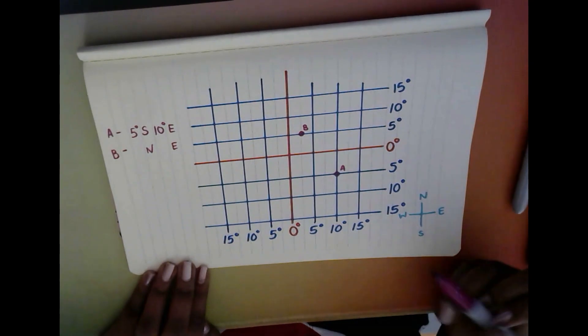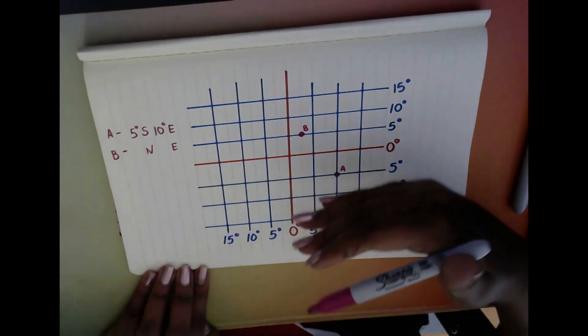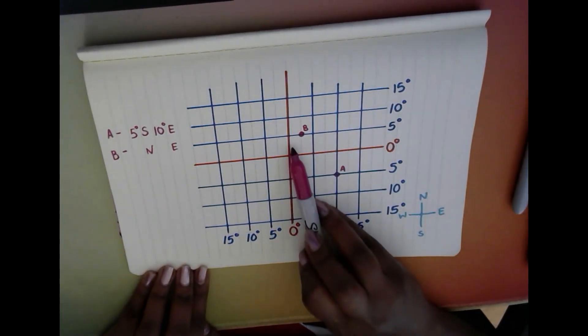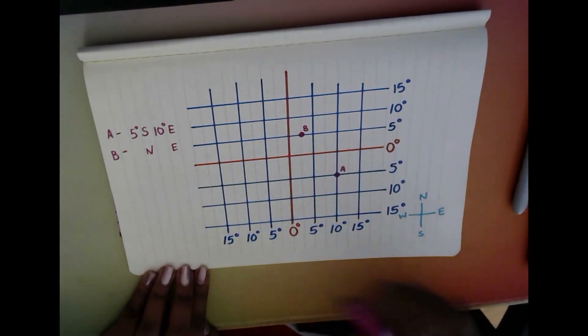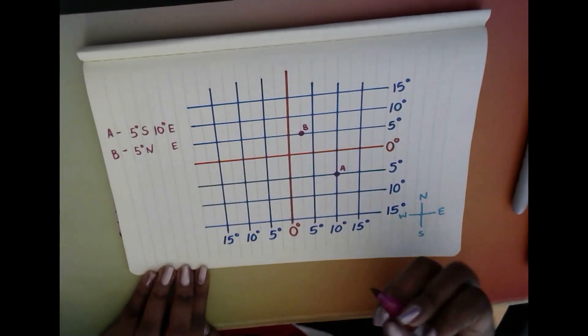Then we're going to start like normal. We're going to look at latitude first because we always look at latitude first, and we can see that it is sitting nicely on the five degree line, so we are on five degrees north.